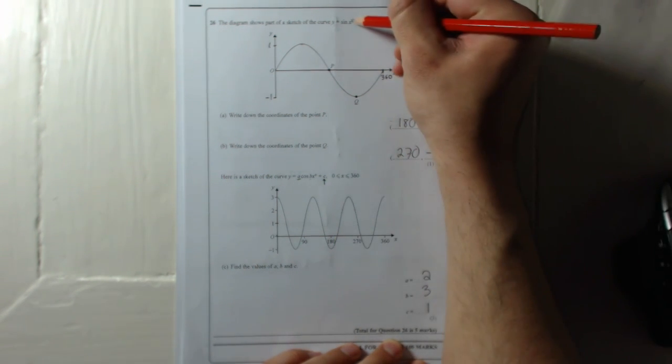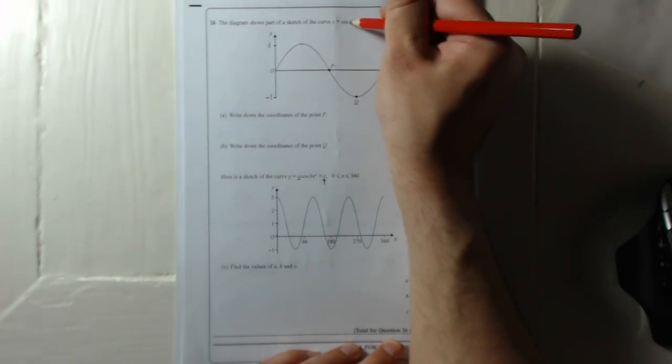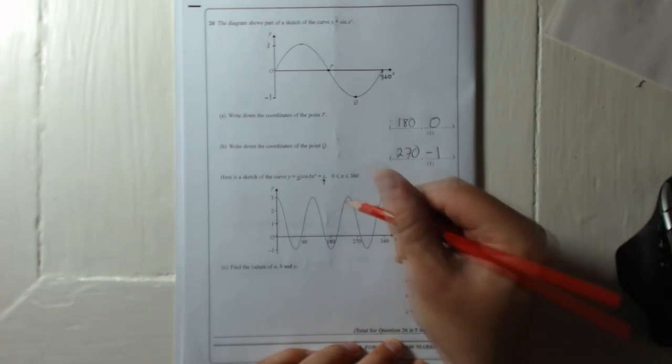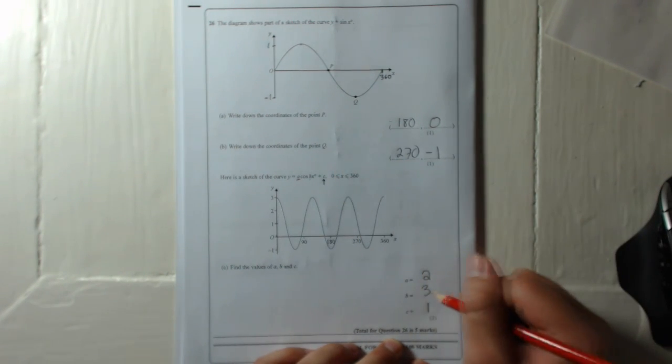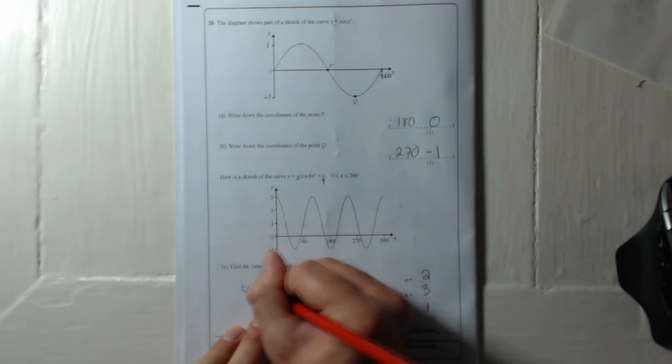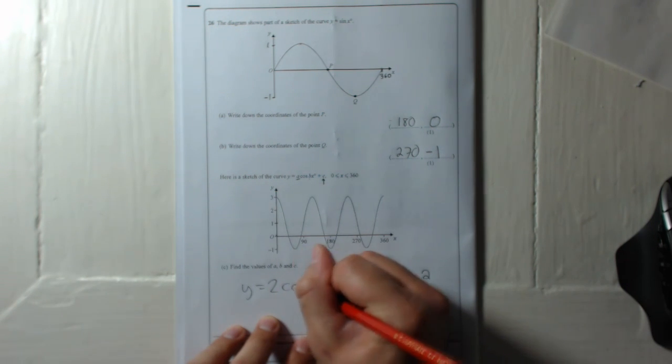Because like I said here, if it was sine 2x it would be half; if it was sine 3x it would be a third; if it was sine 4x it would be a quarter, and so on. So our b there is three. So I'll write it out in full: y equals 2 cos 3x plus 1.